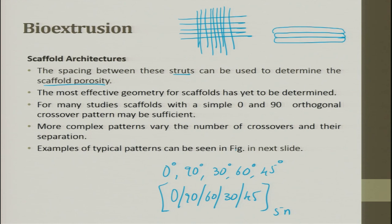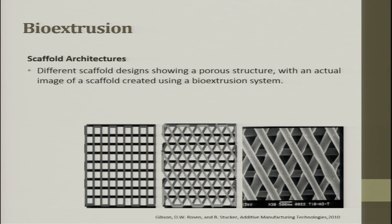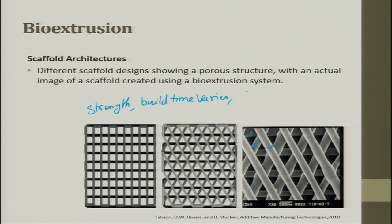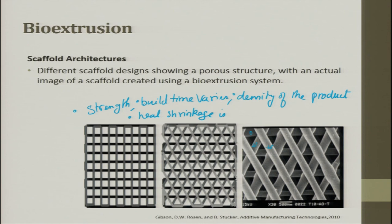Examples of typical scaffold architectures are shown in the figures — you can see 0-degree, 45-degree, and minus-45-degree configurations. Different scaffolds have different strengths, build times vary, and the density of the product varies. Heat shrinkage is also controlled. These are very important factors when working on porous structures and making scaffolds for real-time application, which leads directly towards rapid manufacturing.